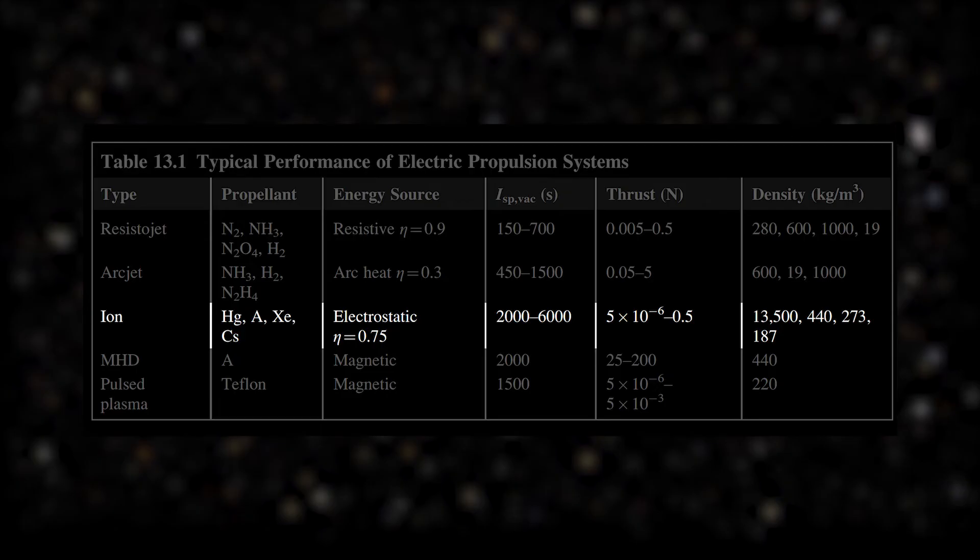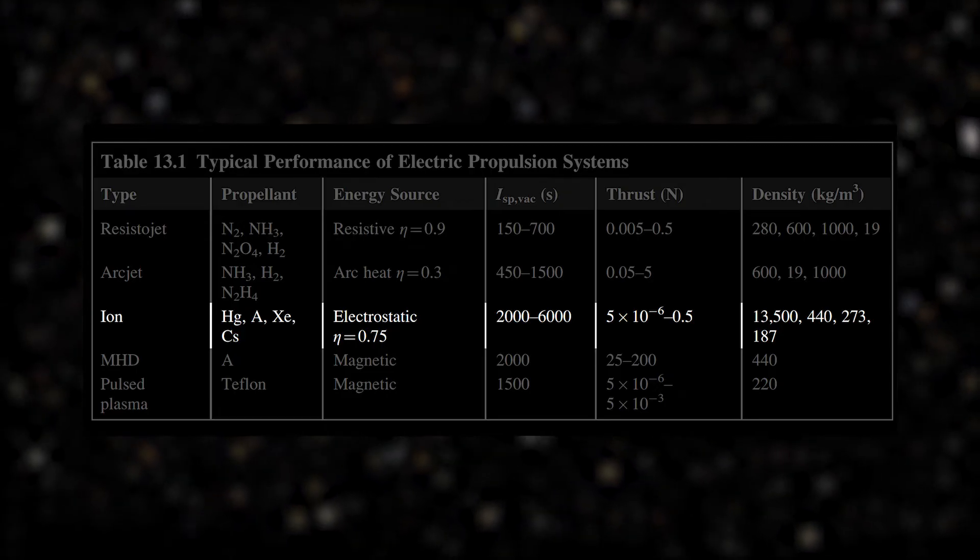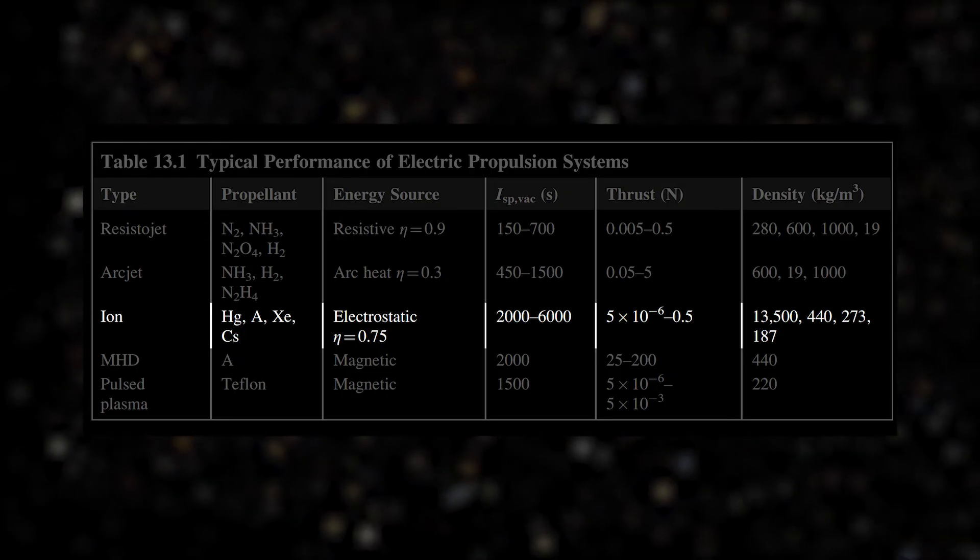It's no surprise that ion thrusters become more and more popular. It has the highest specific impulse among currently available thrusters and also energy conversion efficiency of up to 80%. I've already mentioned one downside which is low thrust.